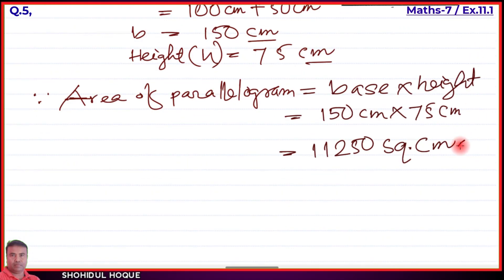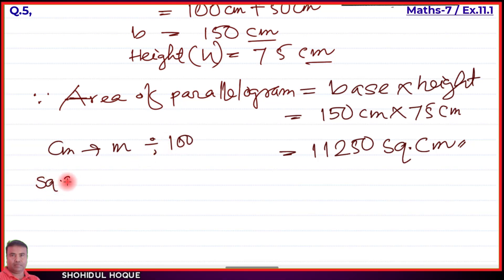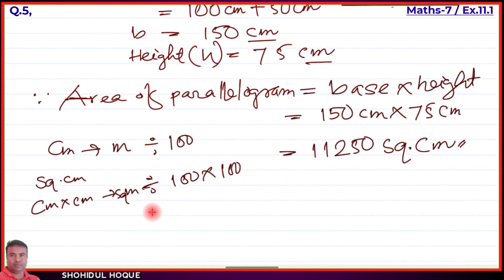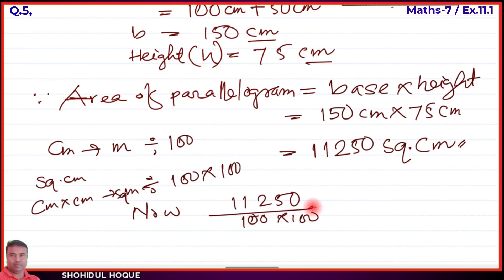Now if the answer is required in square meters, we convert: to convert square centimeters to square meters, we divide by 100 into 100 (i.e., by 10,000), because 1 meter = 100 centimeters, so 1 square meter = 100 × 100 square centimeters. So we divide 11,250 by 10,000.